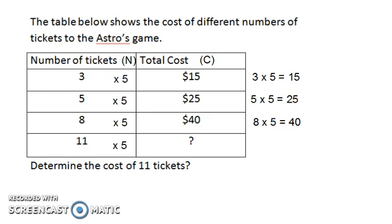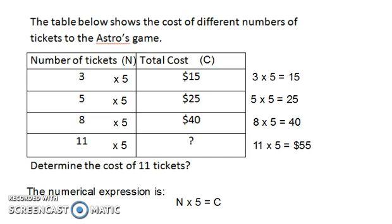Our rule is times 5. The process is times 5. Therefore, our numerical expression can be written as n, representing the number of tickets, times 5 equals c, the total cost. So 11 times 5 is 55. Our answer for number of tickets, 11, the total cost would be $55.